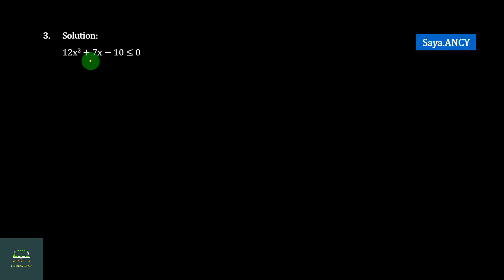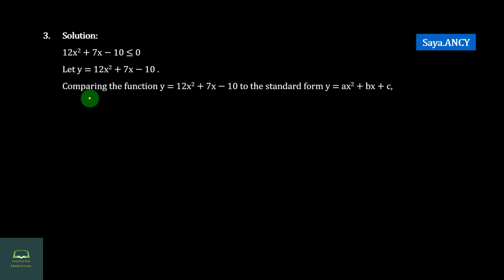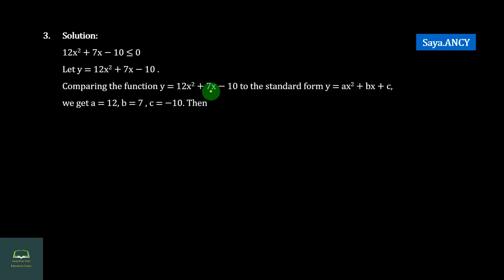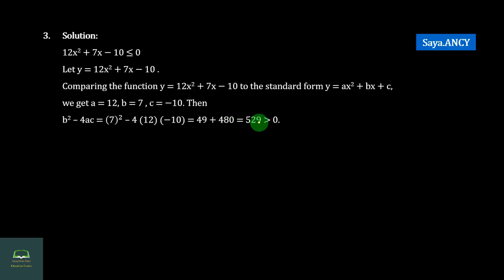Solution number three: 2a squared plus 7a minus 10 less than or equal to 0. Let a equal to 1, comparing to ax squared plus bx plus c, so a equals 2, b equals 7, c equals minus 10. b squared minus 4ac equals 529, which is greater than 0. And a equals 2 which is greater than 0.